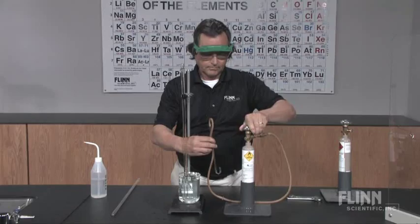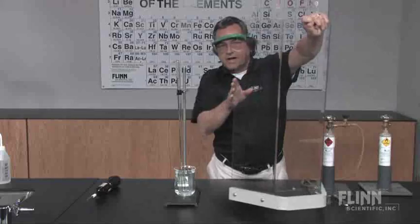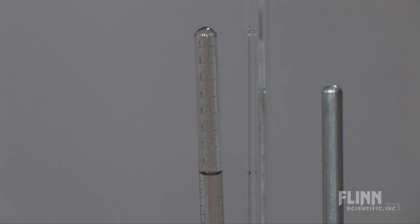For safety, place a safety shield in front of the tube and make sure that students are wearing safety glasses. When ready, touch the tip of a Tesla coil to one of the wires igniting the combustible mixture.